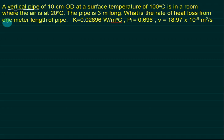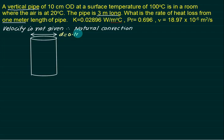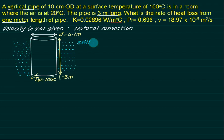Example 2: A vertical pipe of 10 cm outer diameter is at 100°C in a room at 20°C. The pipe is 3 m long; calculate heat loss from 1 meter. Since no velocity is given, this is free convection. The pipe is vertical, so Lc = L = 3 m (total length). Diameter = 0.1 m. The surrounding air is cold (20°C) compared to the cylinder wall (100°C).